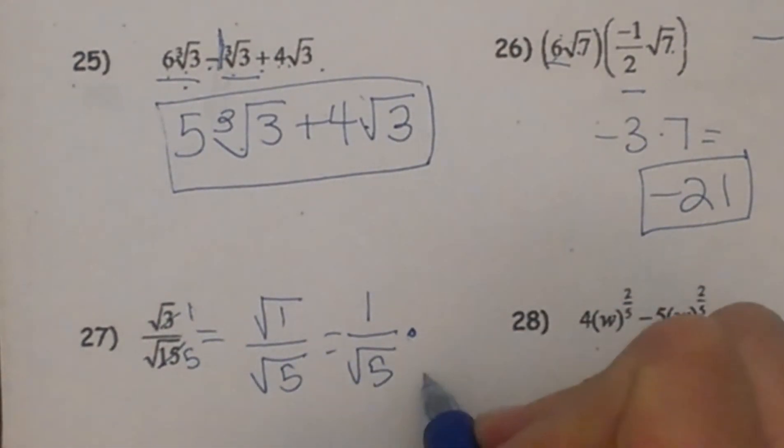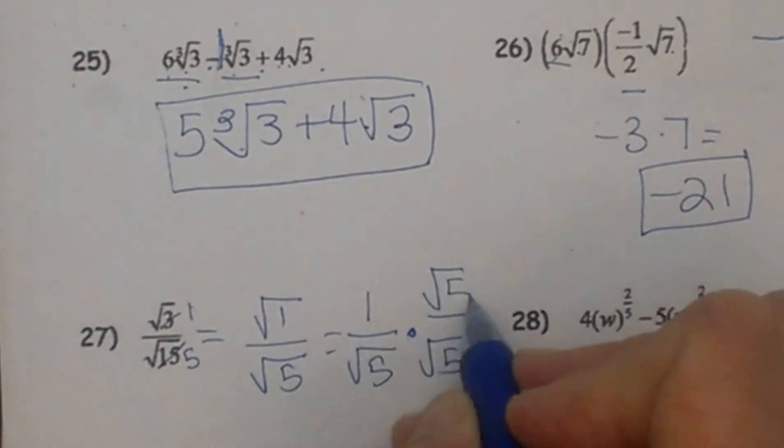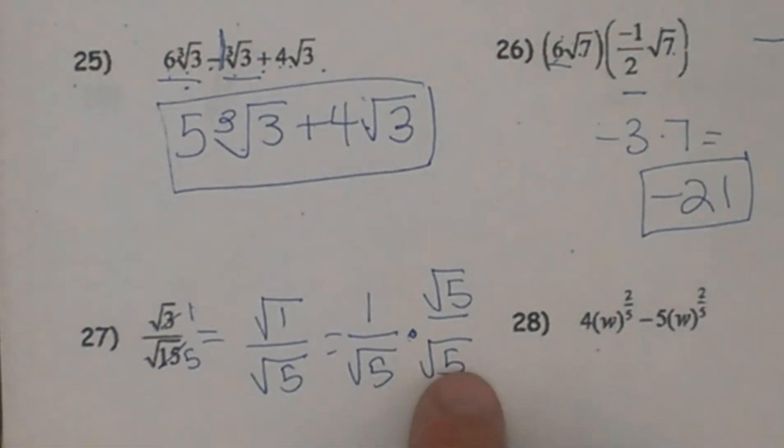So we have to do what we call rationalize it, which just means multiply it times itself so we will not have a radical on the bottom. It will actually be a nice whole number.